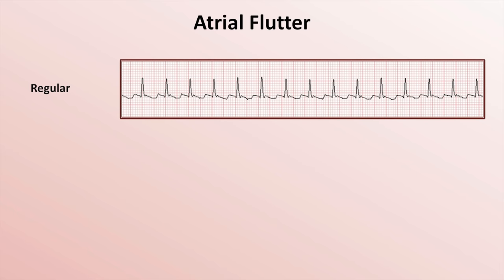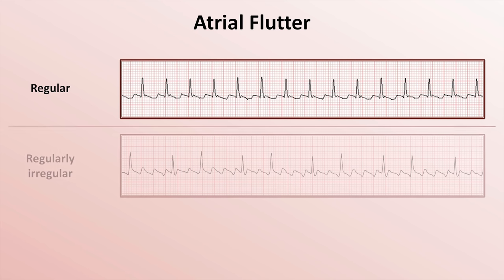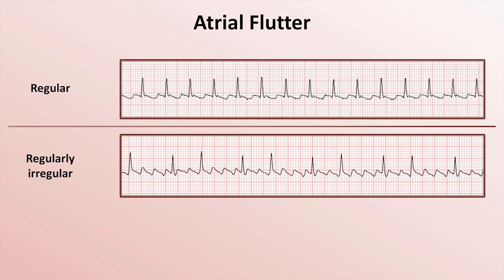Let me show you three variations of atrial flutter. First is a regular ventricular response, in this case a consequence of 2-to-1 AV block, producing a ventricular rate of 150. Occasionally, AV block can manifest a pattern in which 4-to-1 AV block alternates with 2-to-1 AV block in a repetitive pattern, resulting in a regularly irregular ventricular response. If the atrial rate is around 300, this pattern results in a ventricular rate of around 100. The second QRS in each pair often comes slightly late, which is fairly common in this pattern.